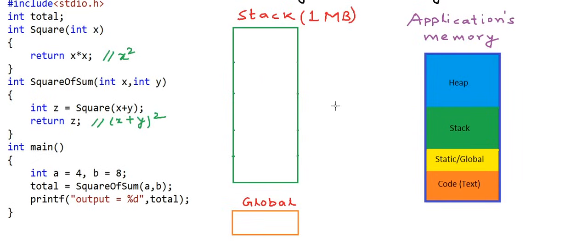Unlike stack, an application's heap is not fixed. Its size can vary during the lifetime of the application. There is no set rule for allocation and deallocation of memory. A programmer can totally control how much memory to use from the heap and till what time to keep the data in memory during the application's lifetime. And heap can grow as long as you do not run out of memory on the system itself.